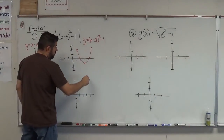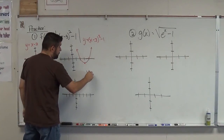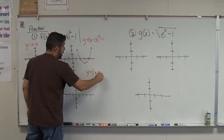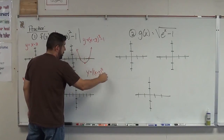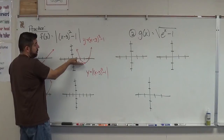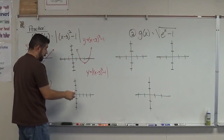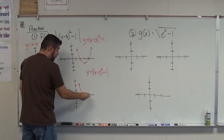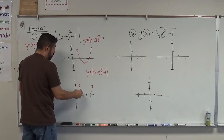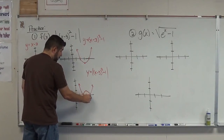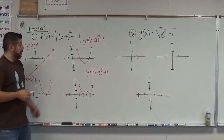The next step is the absolute value of the whole thing. Absolute value takes my previous graph and flips everything that's negative to positive. So I keep these parts here and here, and I reflect the lower part up. And there's my graph — that's the graph of the first practice problem.